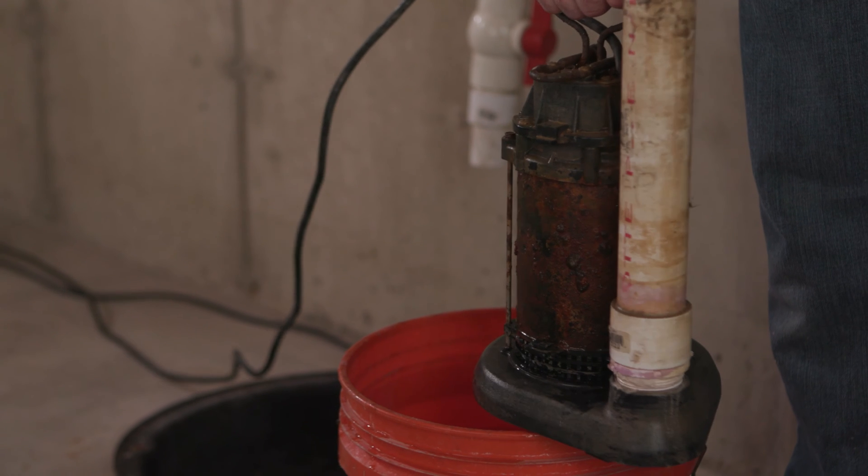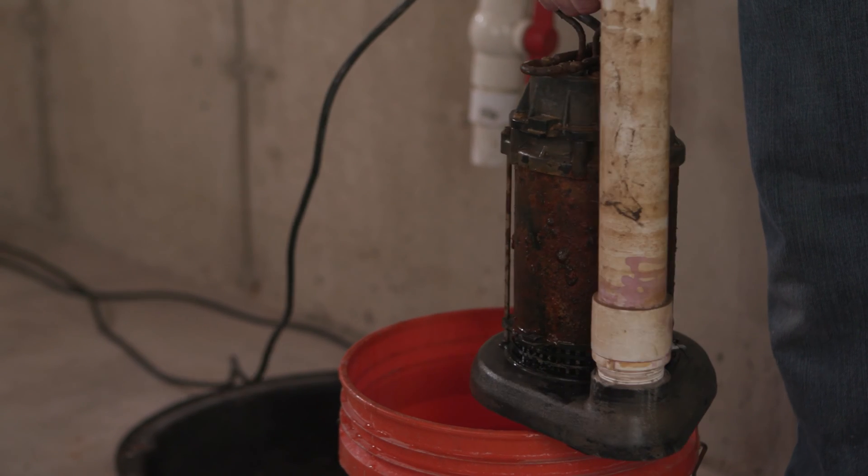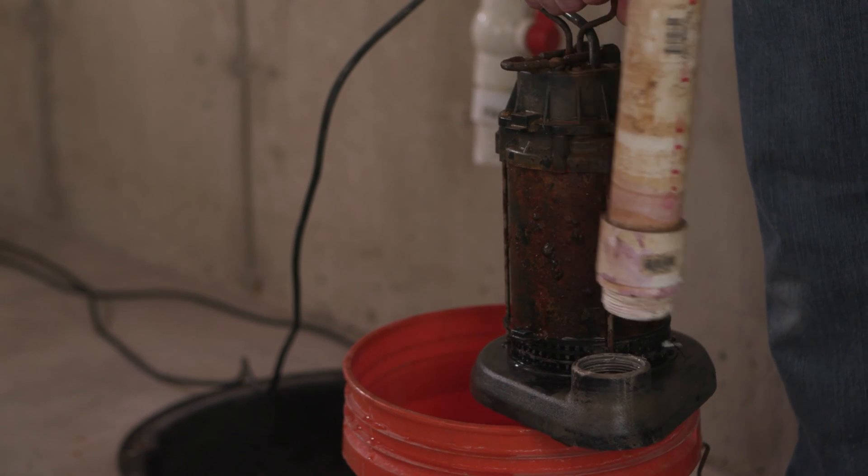Then, disconnect the discharge pipe from your existing sump pump and connect the discharge pipe to the smart pump.